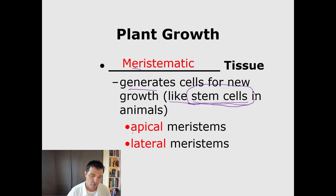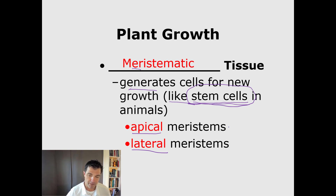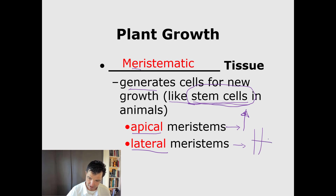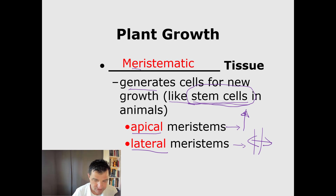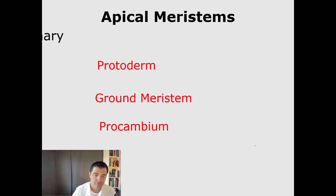Meristematic tissue comes in two forms: apical meristems and lateral meristems. In apical meristems, the growth is upward, for example growing taller. Whereas in lateral meristems, we're talking about a plant growing wider. So just different types of growth — apical and lateral meristematic tissue.